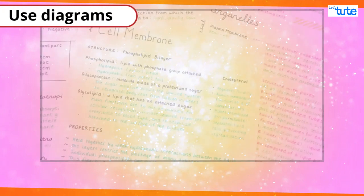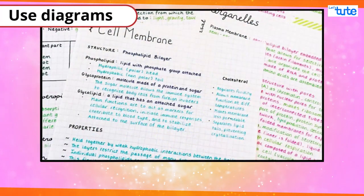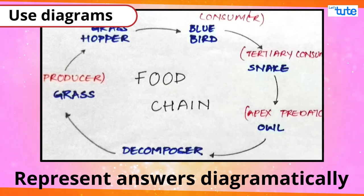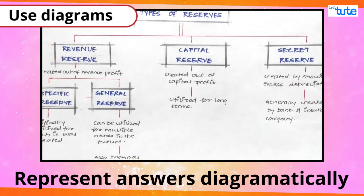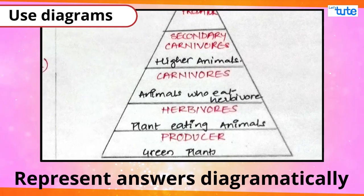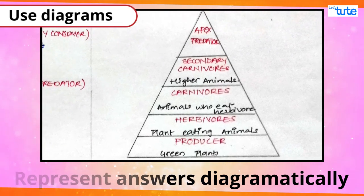It is not always necessary to have things in written format. We can represent answers diagrammatically or by using flow charts, tree diagrams, wherever possible. This would be part of your visual memory. Just by remembering the diagram, you can relate to the whole answer.